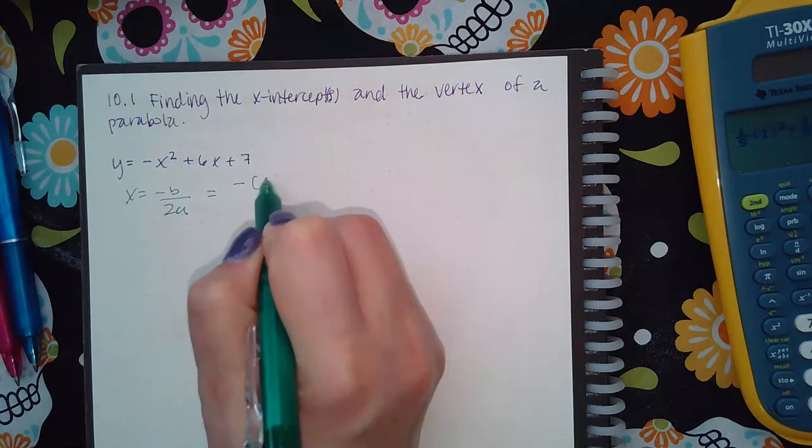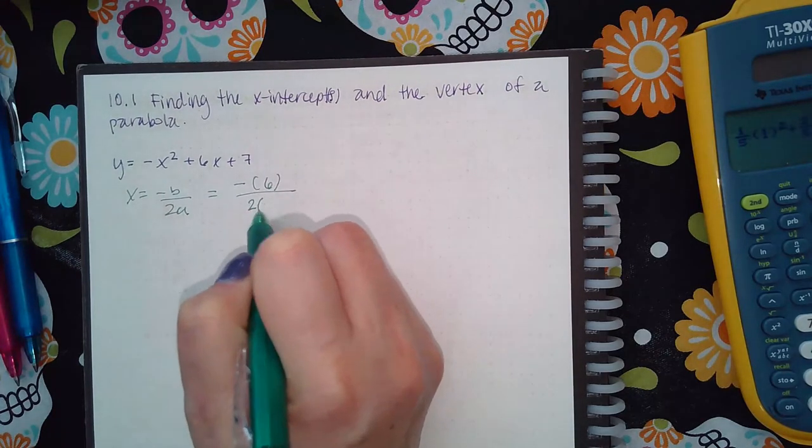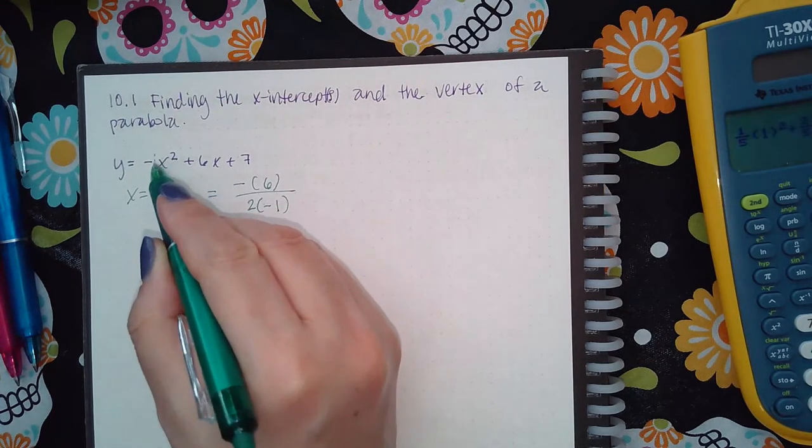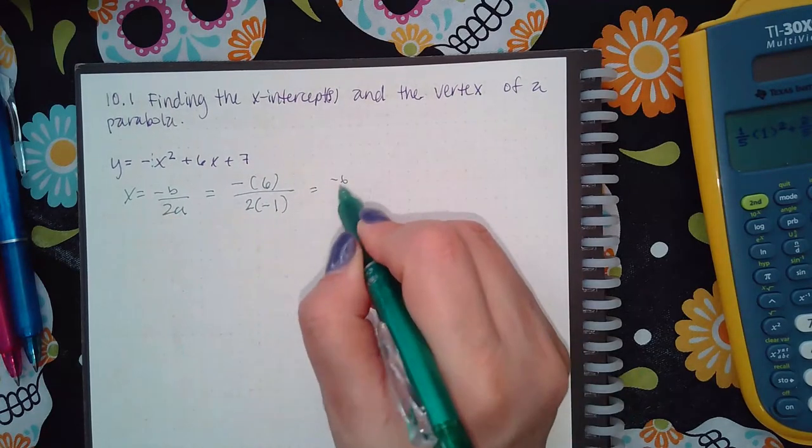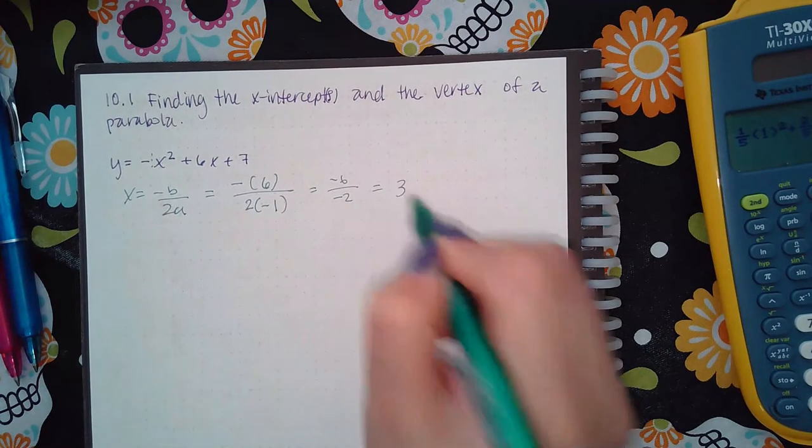So in this case, b is a positive 6 and a is a negative 1. And so then I get negative 6 over negative 2, which turns out to be positive 3.